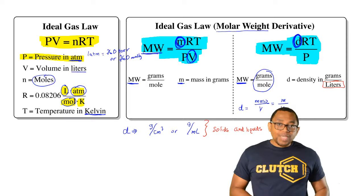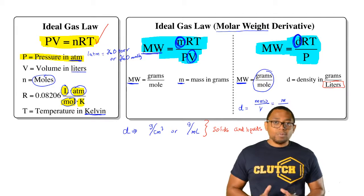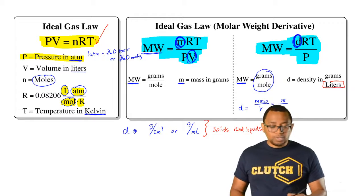So we have these three different versions of the ideal gas law. This one is just your basic normal type. We use the other two anytime they're talking about the molecular weight or molar weight of a gas particle or gas molecule.